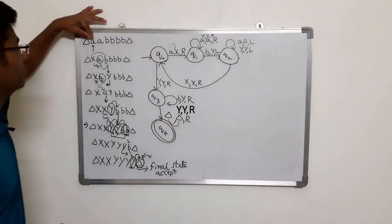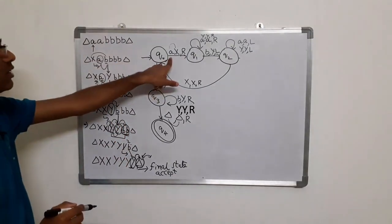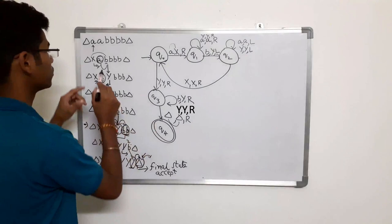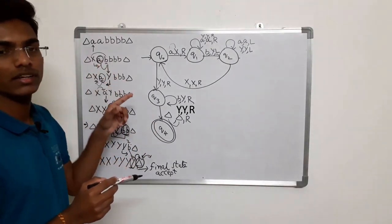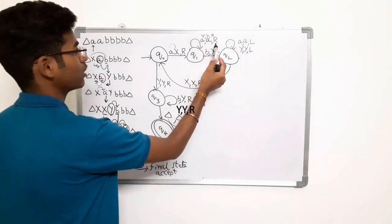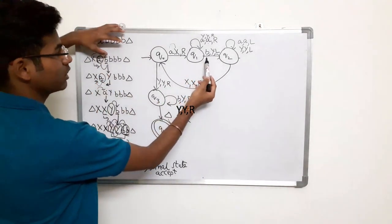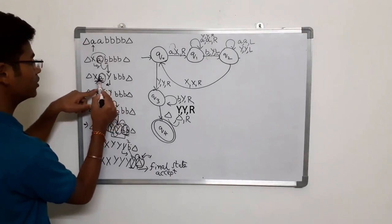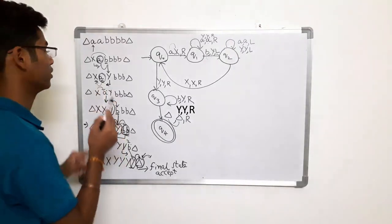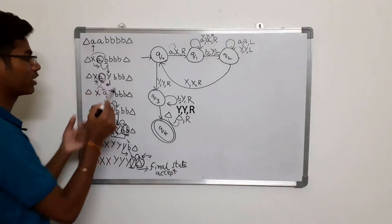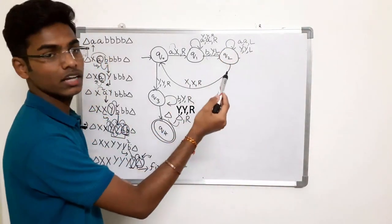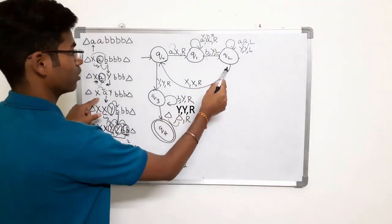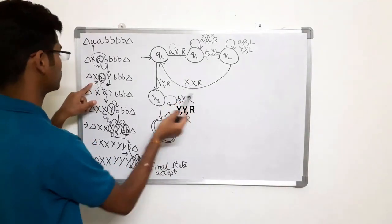Let me explain it again. Initially we are at q0 and our job is to make small 'a' as X — we make this 'a' as X and move towards right. Our goal is to find small 'b' on the right side. For any number of a's, keep them as it is and move towards right. Once you have reached 'b', convert it into Y and move left. Now your goal is finding X on the left side — there is nothing to do with 'a', so keep it as it is and move towards left. For any number of a's, keep them as it is and move towards left.